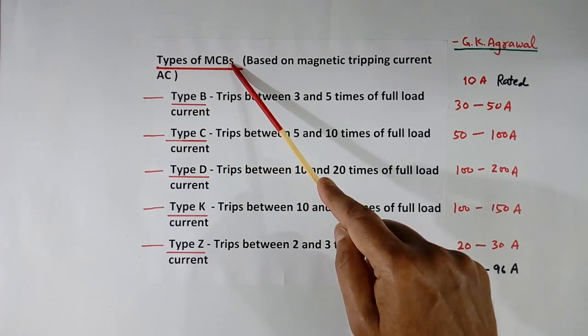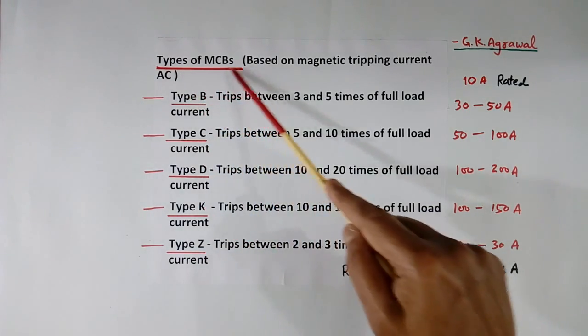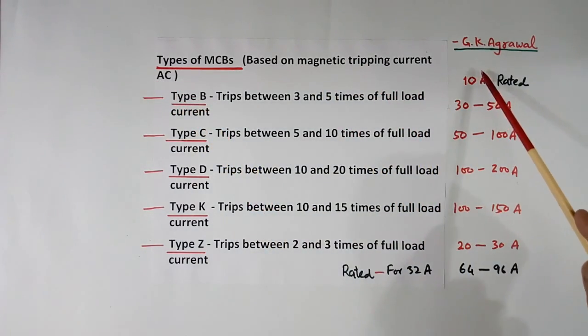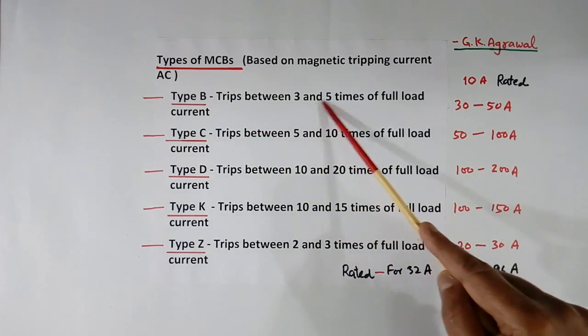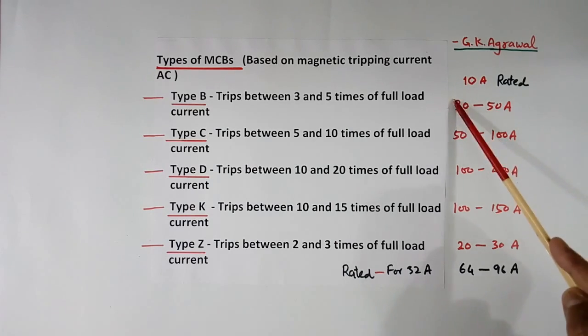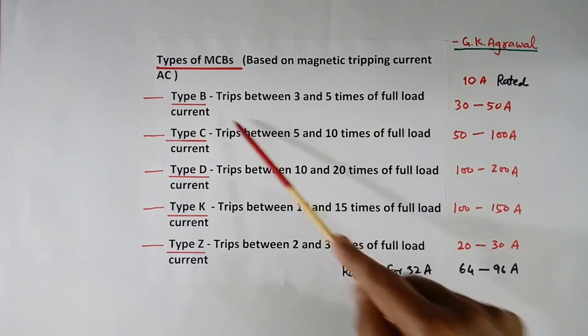Now types of MCB. There are 5 types: B, C, D, K, Z. They are defined based on magnetic tripping current, AC current. Suppose we have MCB which is rated for 10 A, or we can say full load current is 10 A. This is just an example. Then type B MCB will trip between 3 and 5 times of full load current. 3 times of this current means 30 A, 5 times means 50 A. So MCB rated for 10 A will trip between 30 to 50 A, provided it is type B.